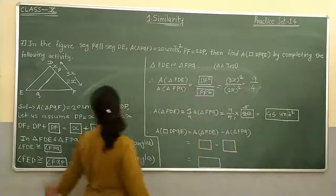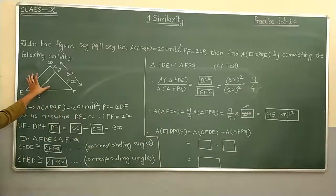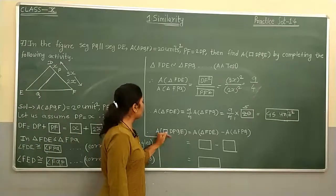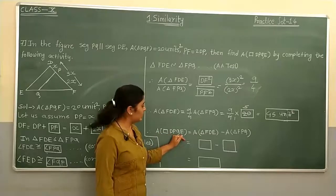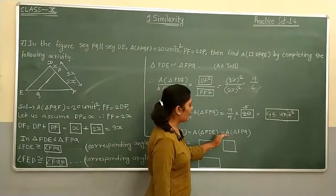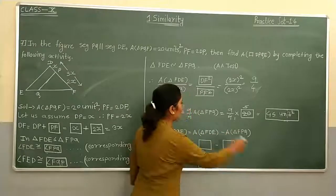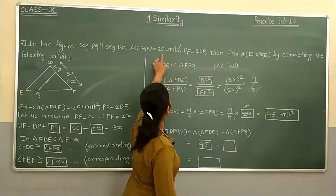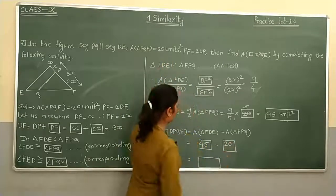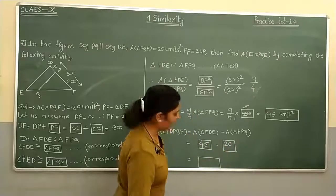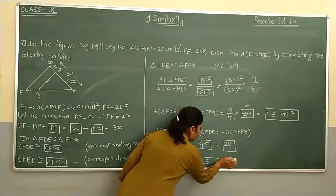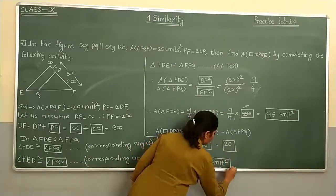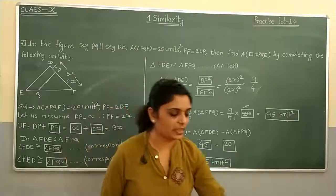Now we have both triangle areas. Area of quadrilateral DPQE equals area of triangle FDE minus area of triangle FPQ, which is 45 minus 20, which equals 25 unit square.